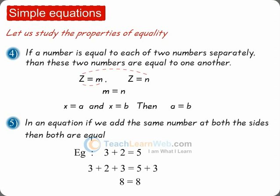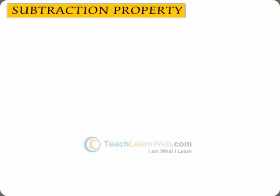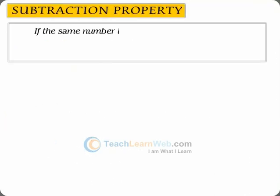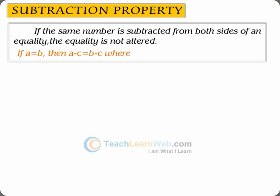Subtraction property: if the same number is subtracted from both sides of an equality, the equality is not altered. If a equals b, then a minus c equals b minus c, where a, b, and c are any three numbers.